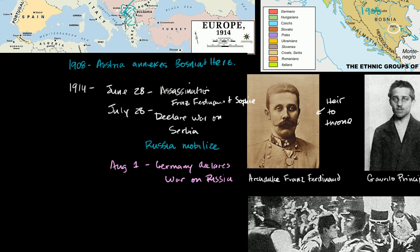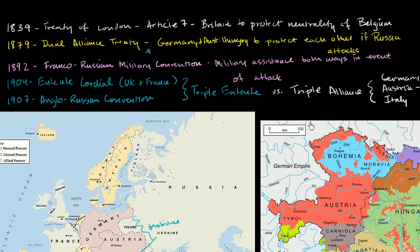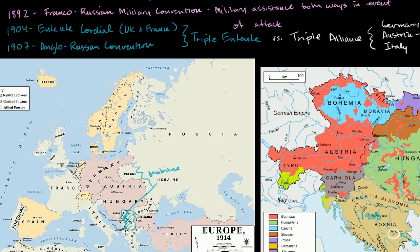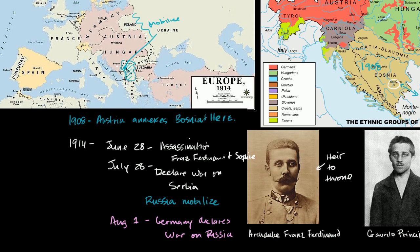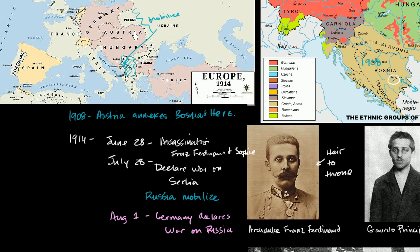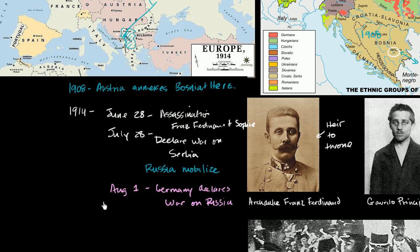Now we have to go back to the alliances again. The Franco-Russian Military Convention called for military assistance both ways in the event of an attack. Germany was aware of this, and reasoned: why wait for France to fully mobilize when France was going to enter the war anyway, with Germany caught right in the middle between the two? So two days later, on August 3rd, Germany declared war on France.